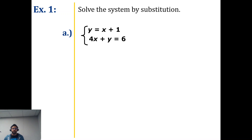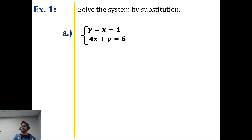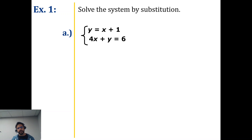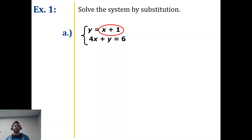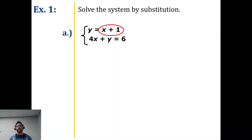So looking at this first real example — we always want to have an isolated variable to do the substitution method. If we don't have a variable that's already isolated, we're not going to use substitution; we'll try a different method we'll learn later on. So if y is equal to x plus one, go ahead and circle x plus one. Just like on the previous basic example, we're going to draw an arrow to what it's equal to — draw it to the y on the first equation.